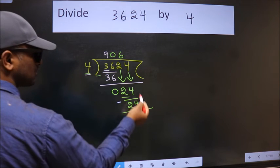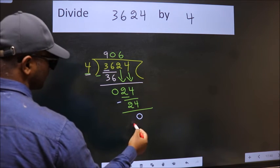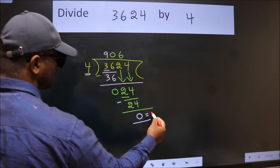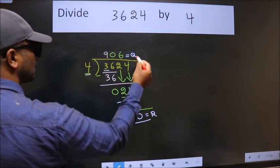No more numbers to bring it down. So we stop here. This is our remainder and this is our quotient.